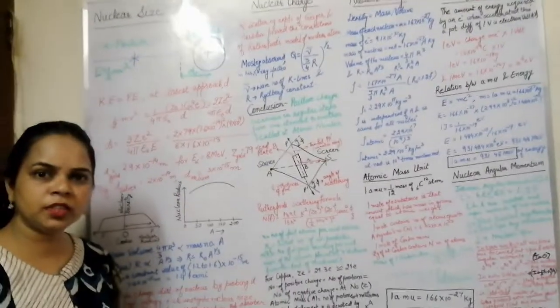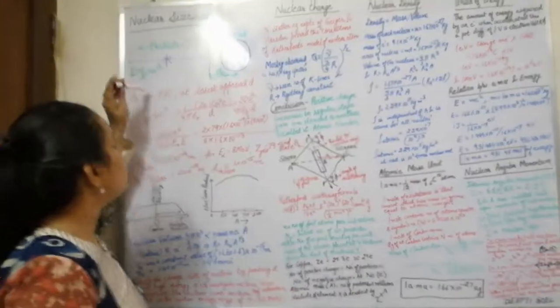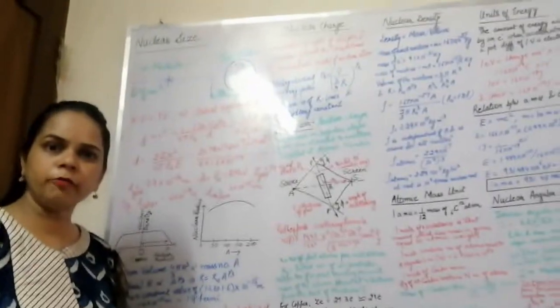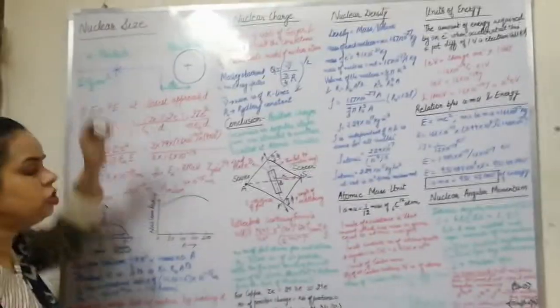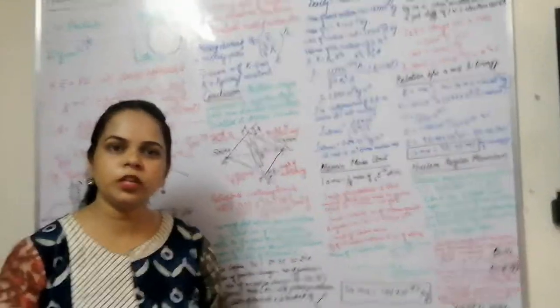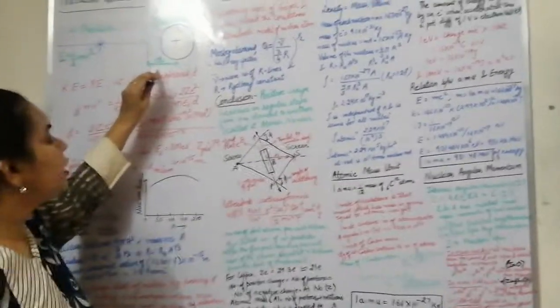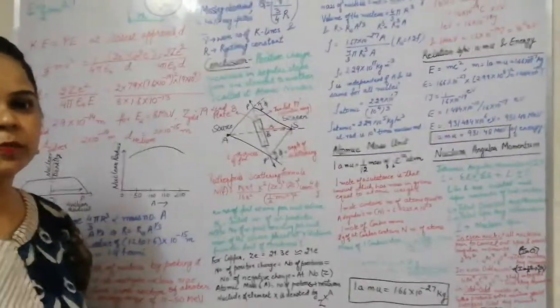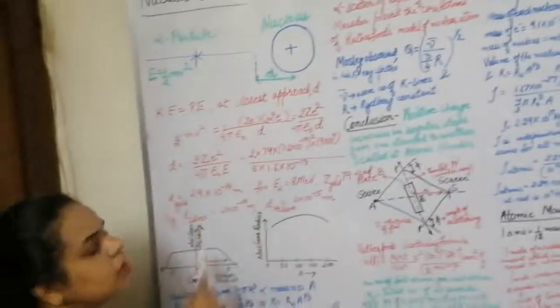Due to Coulombic repulsion, as the position of the alpha particle changes, its potential energy increases and consequently its kinetic energy decreases. At a particular distance d, the kinetic energy of the alpha particle equals its potential energy. This distance d is called the distance of closest approach, beyond which the alpha particle cannot come closer to the nucleus. So this is the minimum distance by which the nucleus and the alpha particle are separated.